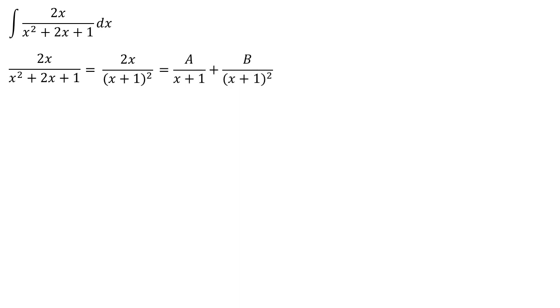We decompose this as A over (x+1) plus B over (x+1) squared, and we have the new equation 2x equals A times (x+1) plus B.